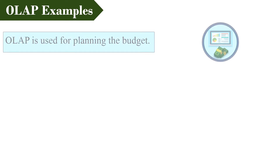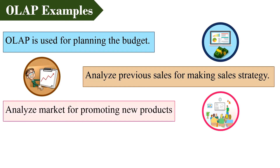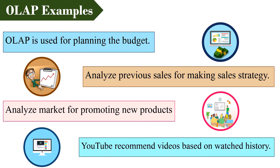Now let us talk about examples of OLAP. OLAP systems are mostly used for planning budgets, making sales strategies, and analyzing markets for promoting new products. Nowadays it is even used by digital platforms such as YouTube, which recommends videos based on your watch history.